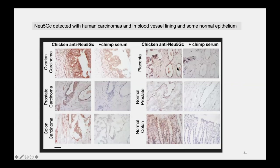This next slide shows Neu5GC expression in endothelium and in some normal tissues like prostate and cancer, colonic epithelium, and blood vessels. When you get cancers like ovarian carcinomas, there is a lot of Neu5GC expression in the endothelium and in the cancer — ovarian, prostate, colon, etc.